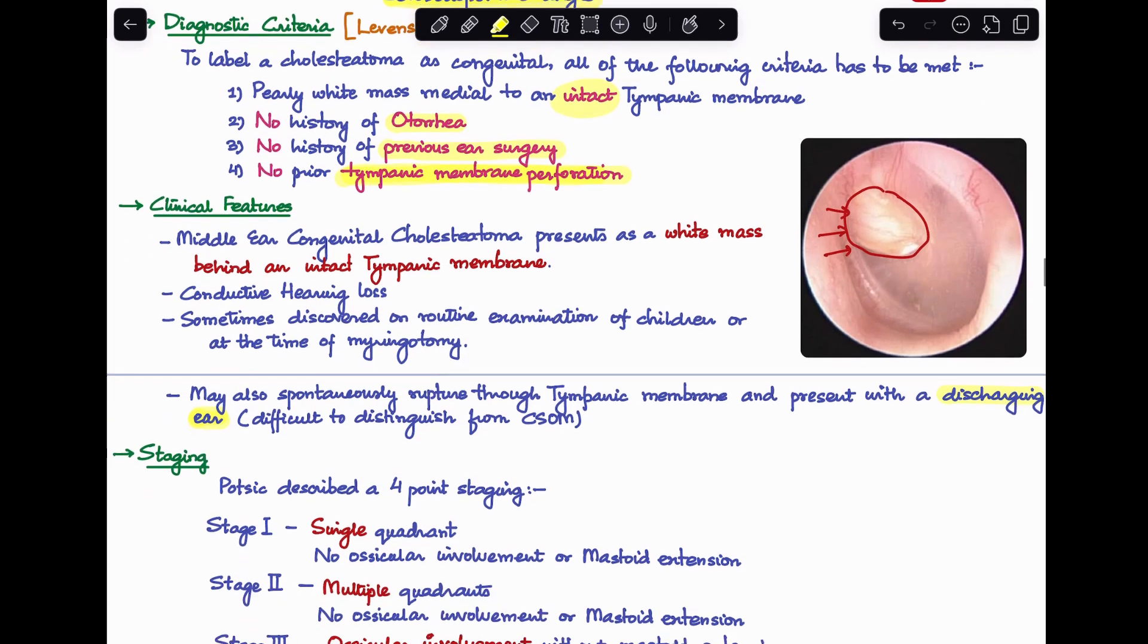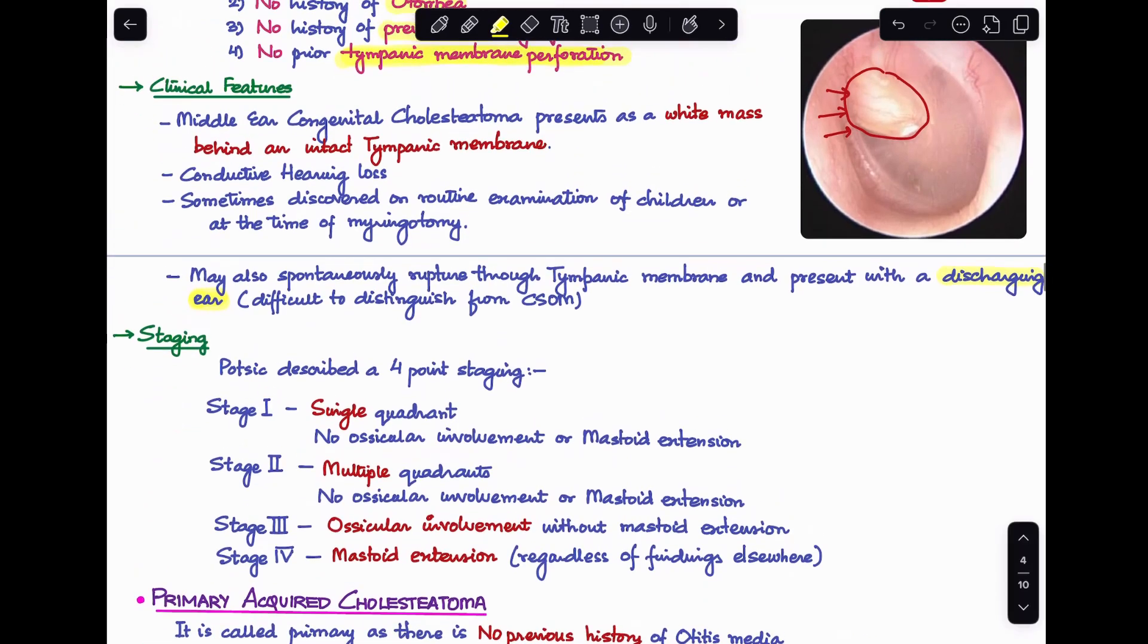Congenital cholesteatoma also has a staging system described by POTSIC, a four-point staging system. Stage 1 is single quadrant involvement with no ossicular involvement or mastoid extension. Stage 2 is multiple quadrant involvement with still no ossicular involvement or mastoid extension. Stage 3 is ossicular involvement without mastoid extension. And stage 4 is when there is mastoid extension regardless of any other findings elsewhere. That's all about congenital cholesteatoma.